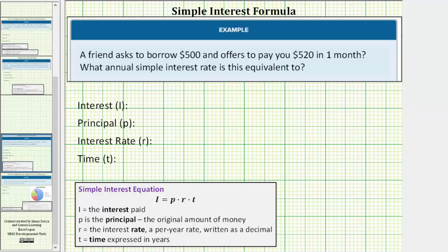Looking at the given information, because your friend wants to borrow $500, the principal is $500. And because he's willing to pay you $520 in one month, the interest paid would be $520 minus $500, which equals $20.